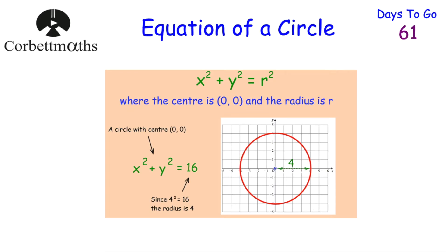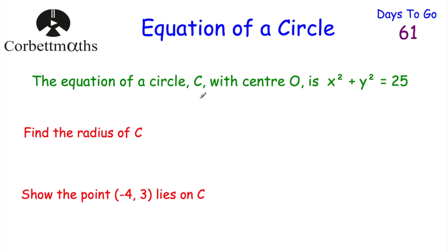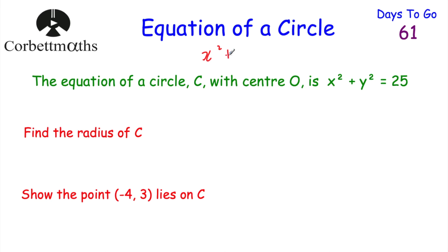Let's have a look at a question. We've got a circle C with centre O, the origin, with equation x squared plus y squared equals 25. We've been asked to find the radius of circle C. Remember the equation is x squared plus y squared equals the radius squared, so the radius squared equals 25. If we square root 25, we get the radius is equal to 5.